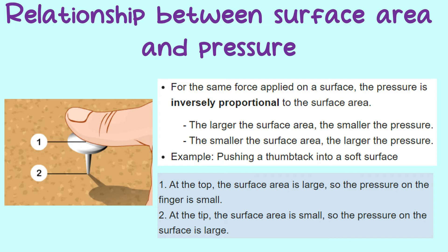Meanwhile, at number 2, which is at the tip of the thumbtack, the surface area is small, so the pressure on the surface is large. That is why you can press a thumbtack into a softboard.